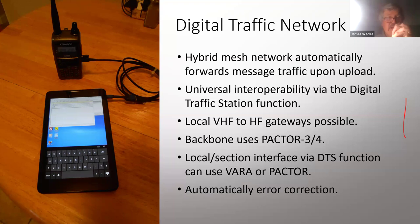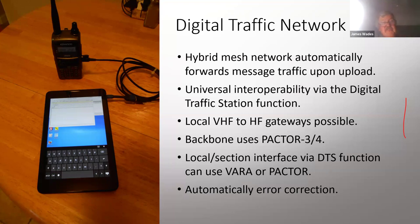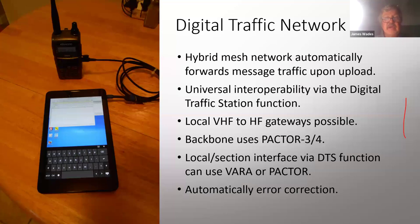In our modern age, digital methods have really taken off. Within RRI we have the Digital Traffic Network — the hybrid mesh network — that is automated. As soon as you upload traffic, it's automatically routed to its destination region. There's also interoperability with other networks through the Digital Traffic Station function, accessible using VARA and PACTOR methods, with automatic error correction built into the relay process. However, error-free messages also rely on the operator checking his input for human error at the point of origination.